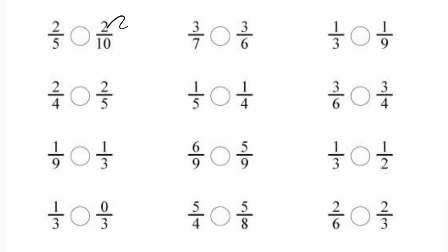In the next question, 2 by 5 and 2 by 10 — again the numerators are same. So the fraction with the smallest denominator has the greater value. So 2 by 5 is greater here, and we will put the greater sign in the circle. 2 by 5 is greater than 2 by 10. In the next question, 3 by 7 and 3 by 6 — again numerators are same. So 3 by 7 is smaller because the fraction with the greater denominator has the smallest value. So we will put the smaller sign here.